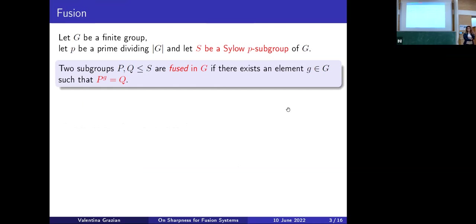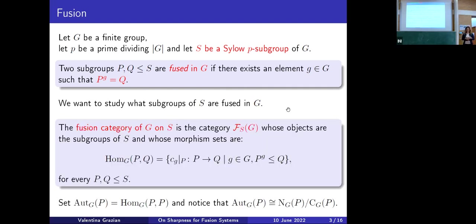We want to take all these subgroups of S and try to understand which ones are fused by using the action of G by conjugation. To do that in a mathematical setting, we use a category — the fusion category of the finite group G on its Sylow P-subgroup S. This is the category whose objects are all subgroups of S. The set of morphisms from P to Q, denoted Hom_G(P,Q), is given by the restrictions of conjugations by elements g in G that map P into Q.